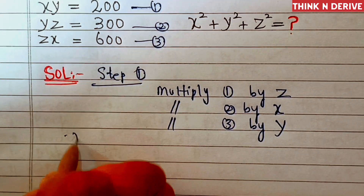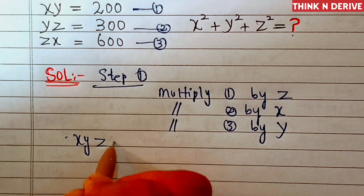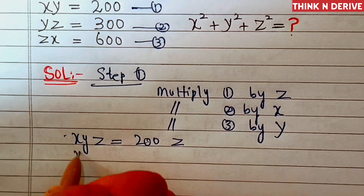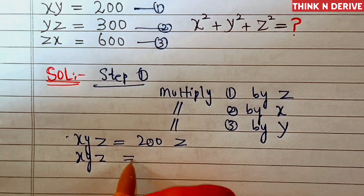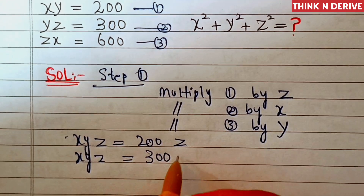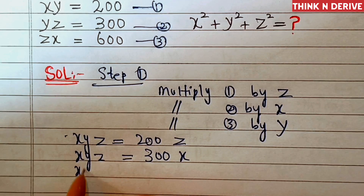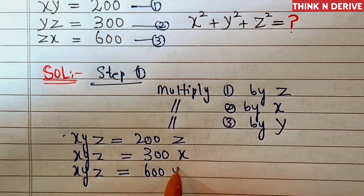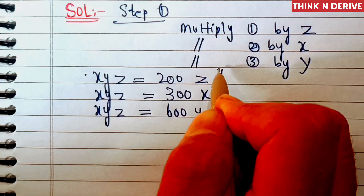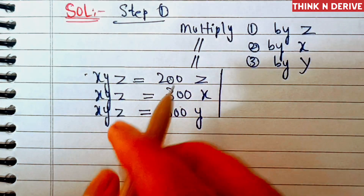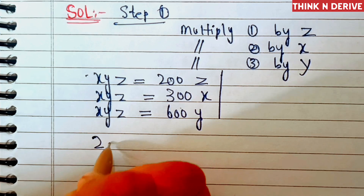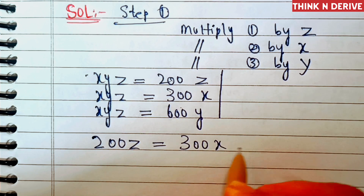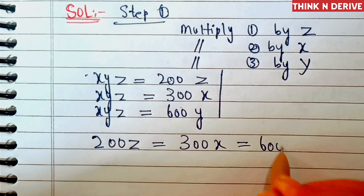Equation first will become x times y times z equal to 200z, equation second will become xyz equal to 300x, and equation third will become xyz equal to 600y. So we'll equate these three equations, and we get 200z equal to 300x equal to 600y.